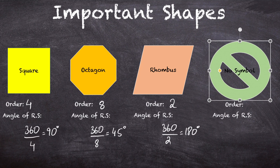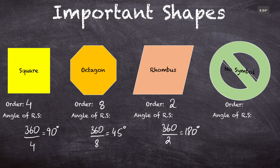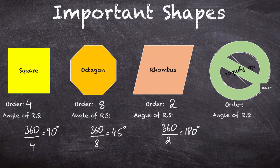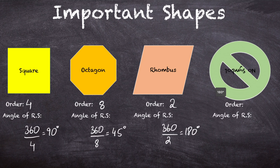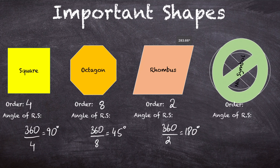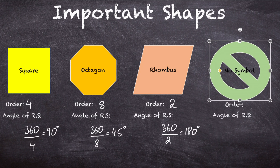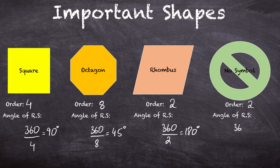Now let's look at the no symbol we see in everyday life. We rotate it, and at 180 degrees we get the exact same shape. Give it another turn and we get it again at 360 degrees. So the order of rotational symmetry is 2 and the angle is also 180 degrees — the same as the rhombus.